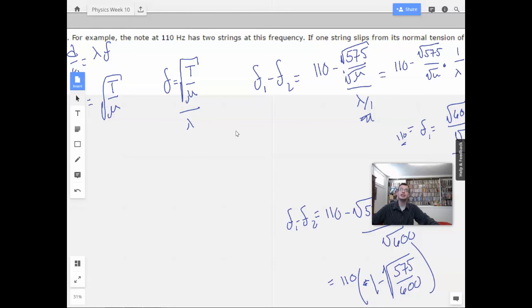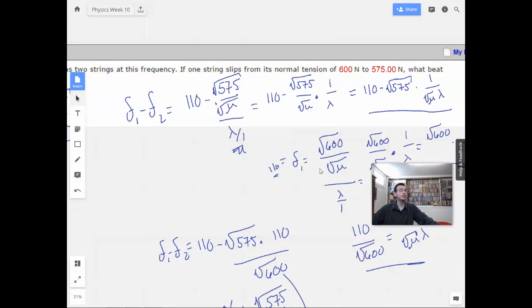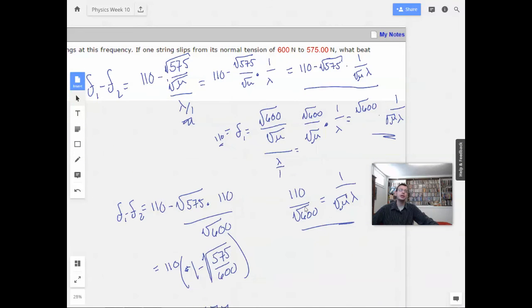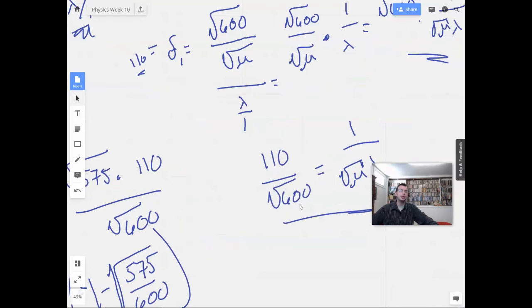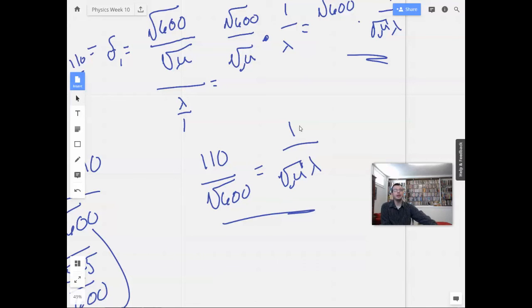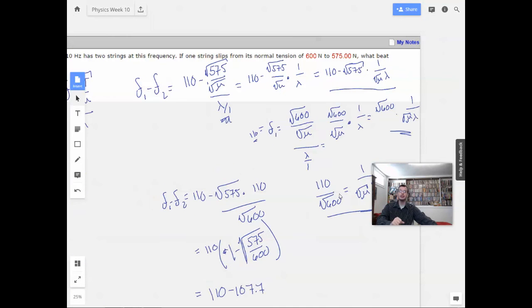But we did know that it was the same as the other string. So we used the information we already knew, which was 600 newtons and 110 hertz, to find out the piece of data we didn't know. We don't actually know that data, but we do know what this quantity was, the square root of mu times one over lambda. And we used that information, plugged it back in to what we didn't know up here.